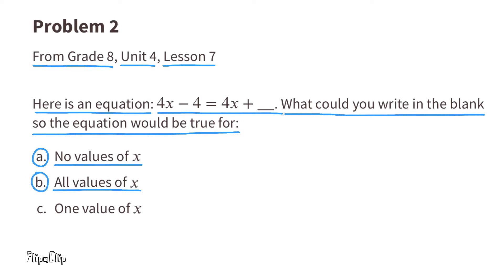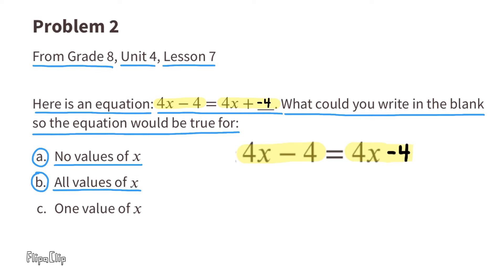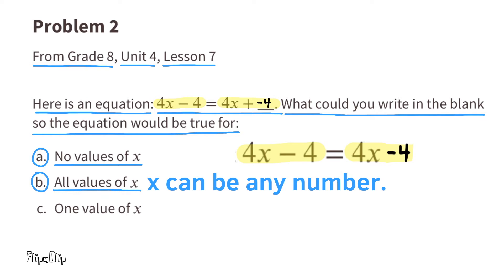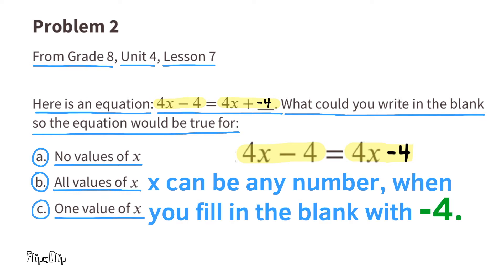Part B: all values of x. 4x minus 4 equals 4x plus a negative 4, because 4x plus a negative 4 is the same as 4x minus 4. To make it true for all values of x, we would put a negative 4 in the blank, and that would mean x can be any number.